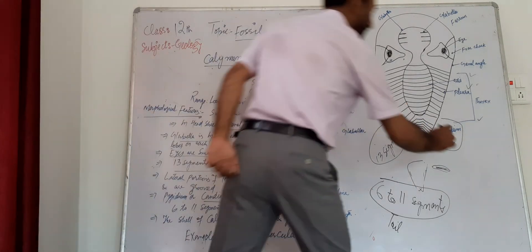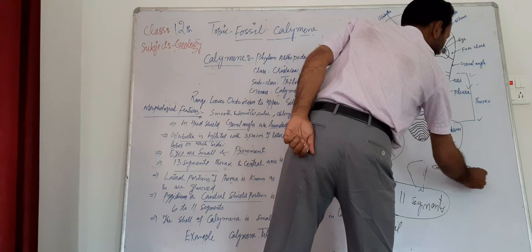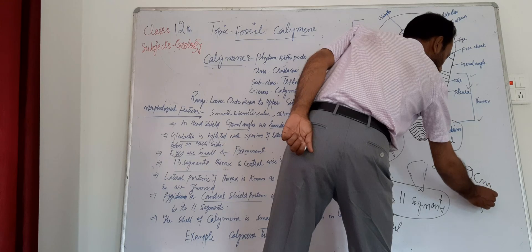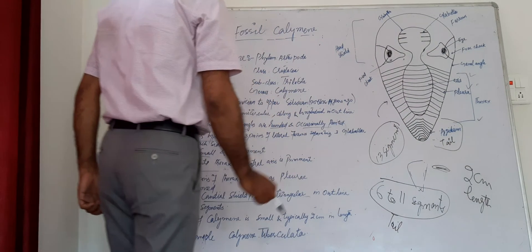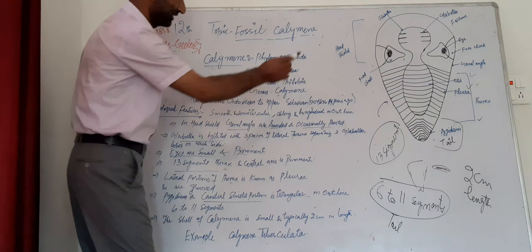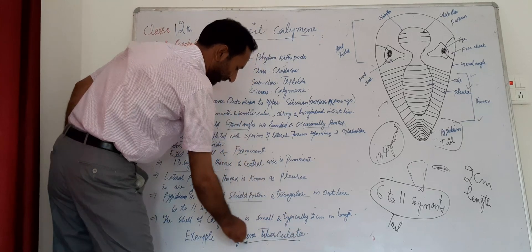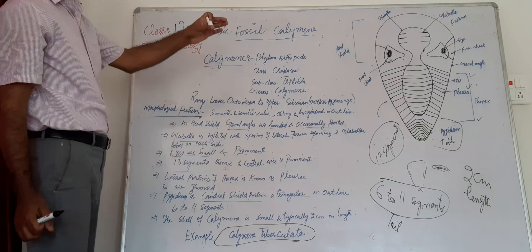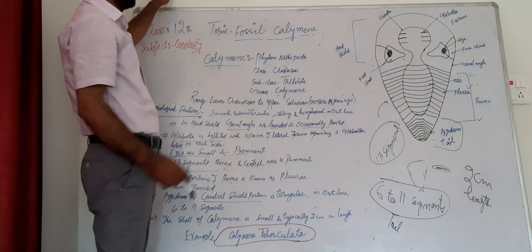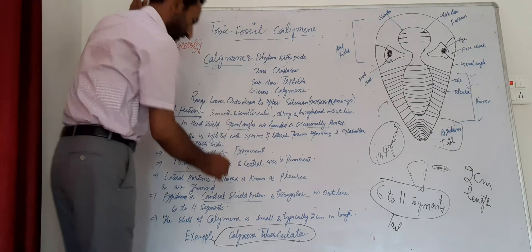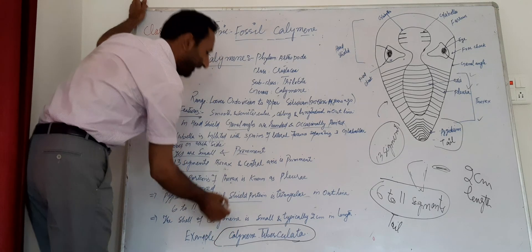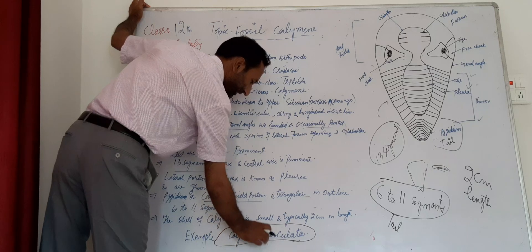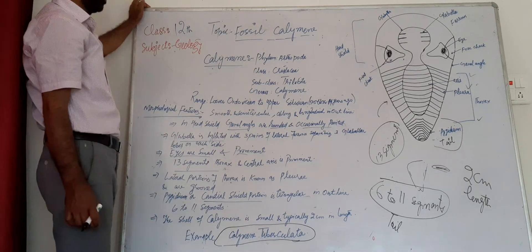The shell of this Calymene is very small — typically up to two centimeters in length. An example of this Calymene type is Calymene tuberculata, which is a representative example of this fossil. We can also observe more morphological features when examining this example.